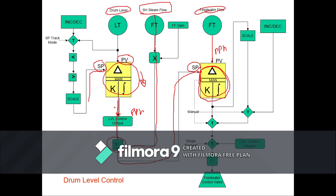The problem is you've taken all that water out of the drum in the form of steam and haven't added any back. Once all that steam is gone, the level is going to be super low — you'll probably trip on low drum level. Three element says: I see the drum level output going down, but I see the steam flow value going up. So it's continually adding the steam flow to that drum level output to keep a relatively stable set point coming to the feedwater flow controller, and it keeps the feedwater valve creeping open.